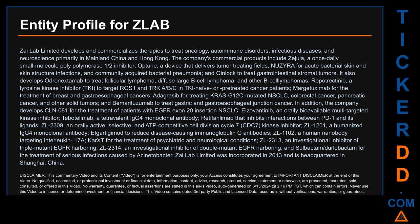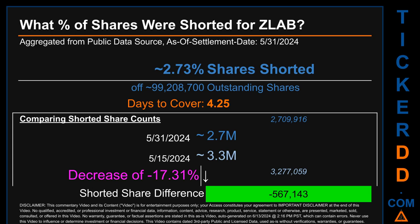ZN-2309, zolantis, an orally active, selective, and ATP-competitive cell division cycle 7 (CDC7) kinase inhibitor; ZN-1201, zolantis, a humanized IgG4 monoclonal antibody; efgartigimod to reduce disease-causing immunoglobulin G antibodies; ZN-1102, zolantis, a human nanobody targeting interleukin-17A; CART for the treatment of psychiatric and neurological conditions; ZN-2313, zolantis, an investigational inhibitor of triple-mutant EGFR; ZN-2314, zolantis, an investigational inhibitor of double-mutant EGFR; and sulbactam-durlobactam for the treatment of serious infections caused by Acinetobacter. ZiLab Limited was incorporated in 2013 and is headquartered in Shanghai, China.